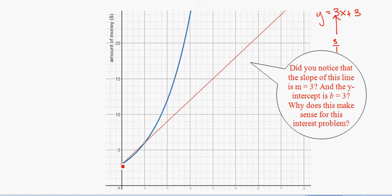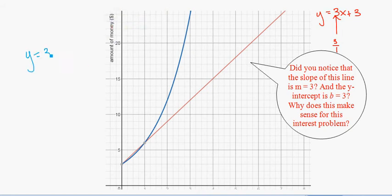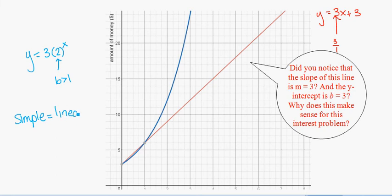Your b value is your y-intercept — we're starting at $3, and then we're just going up $3, $3, $3 every day. So we have that constant slope. It's going to be fairly slow growth compared to the exponential function, where we're doubling. When we look at the exponential function, that was 3 times 2 to the x. We have a base greater than 1, so we have exponential growth, and we can see it's growing very rapidly. So simple interest gives us linear growth, and compound interest gives us exponential growth.